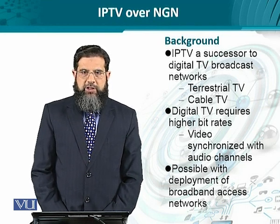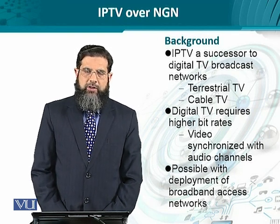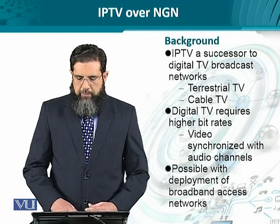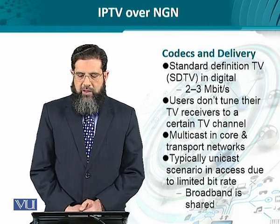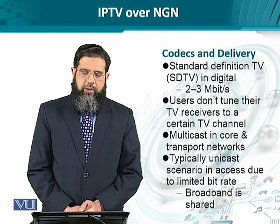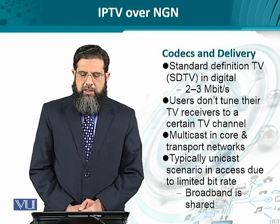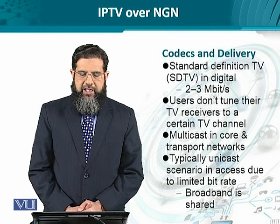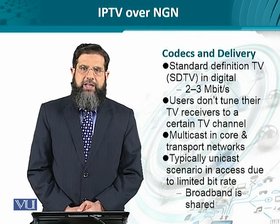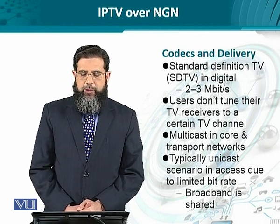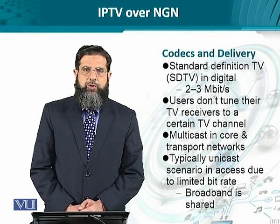There is a requirement to identify some minimum data rate available on both the access side and the core side. For that, broadband access networks are the most natural contenders to offer this service. The coding requirements are such that for standard definition television (SDTV), a data rate of two to three megabits per second is required. SDTV is best understood in contrast to high definition television, HDTV, but we will keep the scope limited to SDTV for now.